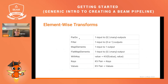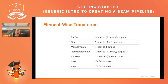There is a list of predefined element-wise transforms, including ParDo, Filter, MapElements, and FlatMapElements. For key-value pairs there are transforms such as Keys — where a key-value pair as input produces just keys as output — and Values, where you receive just the values as output.